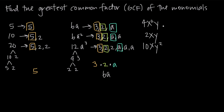Looking at our last example, we'll do the same thing as in the second example. We'll look at the constant coefficients 4, 2, and 10, break those down into their prime factors, then look at the variables. For 4, 2, and 10: we'll break down 4 into 2 and 2, break down 2 into just 2, and break down 10 into 5 and 2.